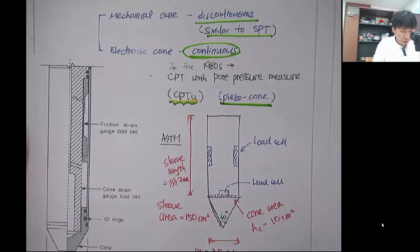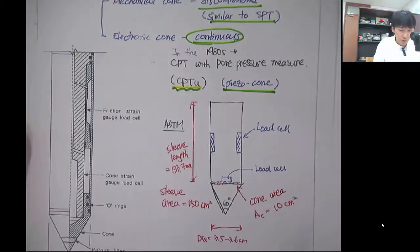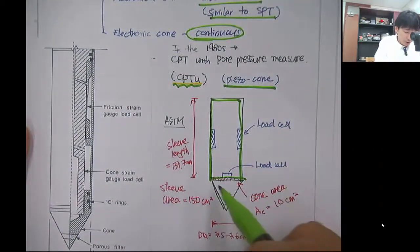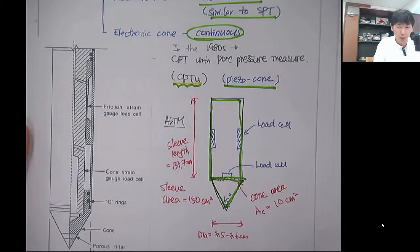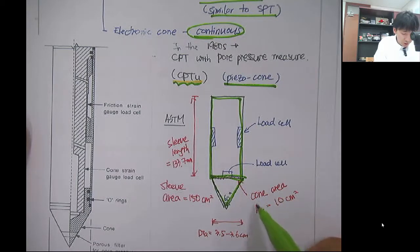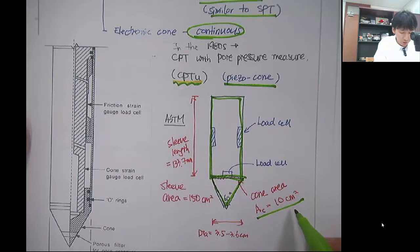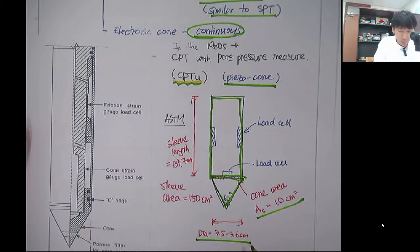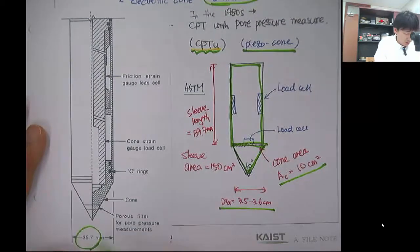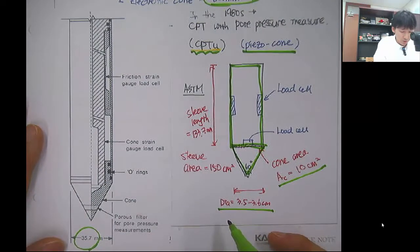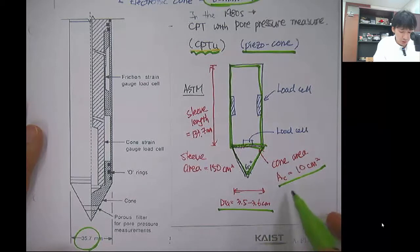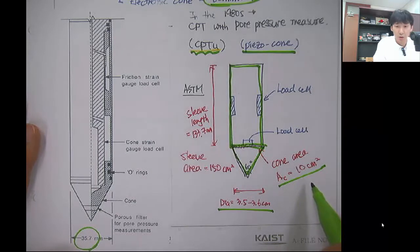The cone is composed of two components: one is the sleeve, which is the stem of this CPT rod, and also the actual cone at the tip. The cone projected area is 10 square centimeters, and the diameter is about 3.5 to 3.6 centimeters. To be exact, it's about 35.7 millimeters. If you use this diameter to get the area, pi D squared over 4, then you get the cone area which is about 10 square centimeters.